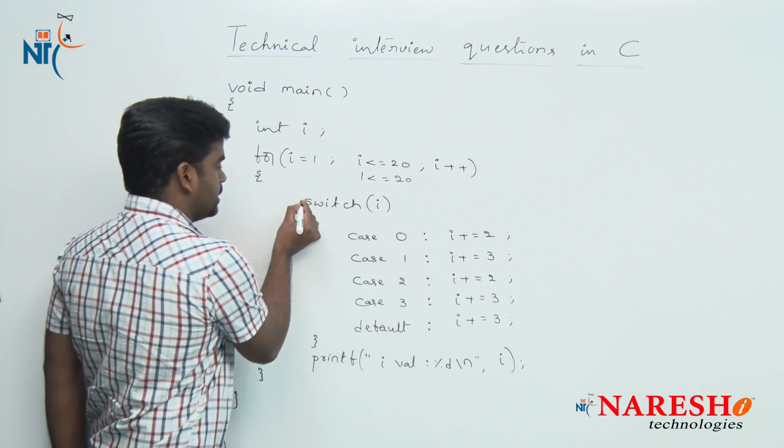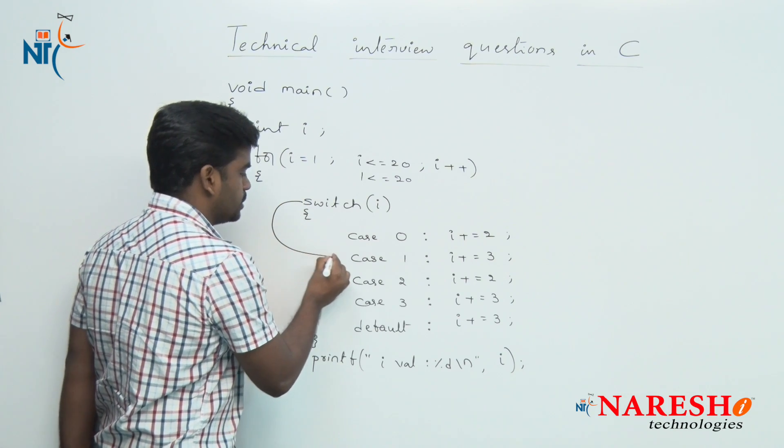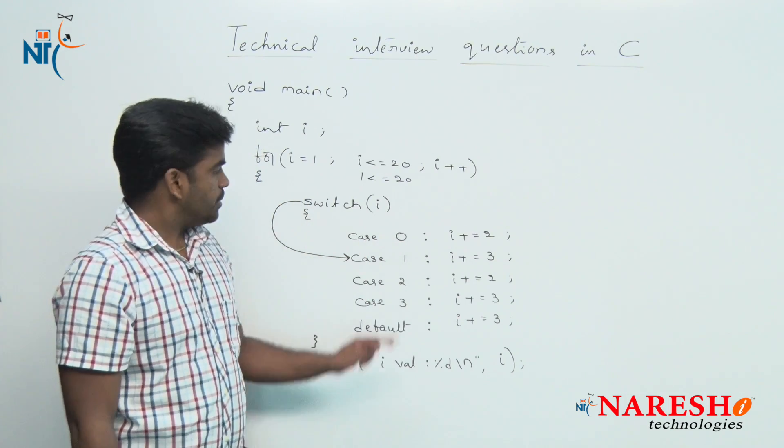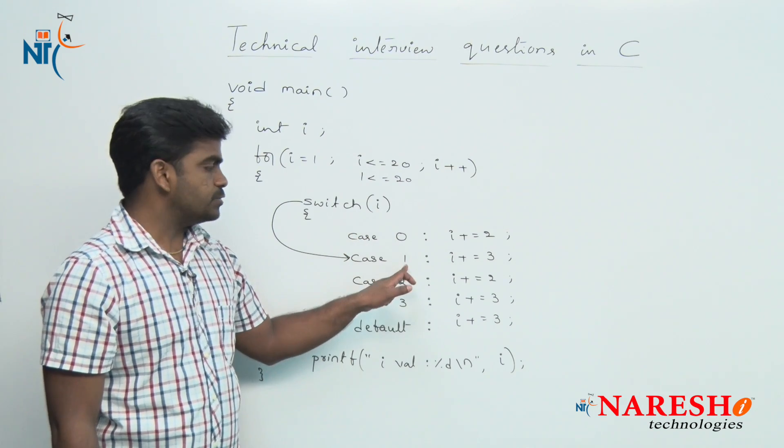Directly it will switch to that particular case, case 1. It will skip that case 0 because here i value substituted is 1.